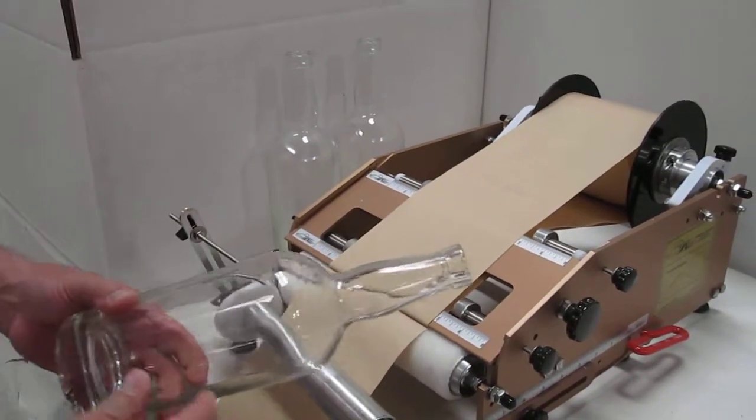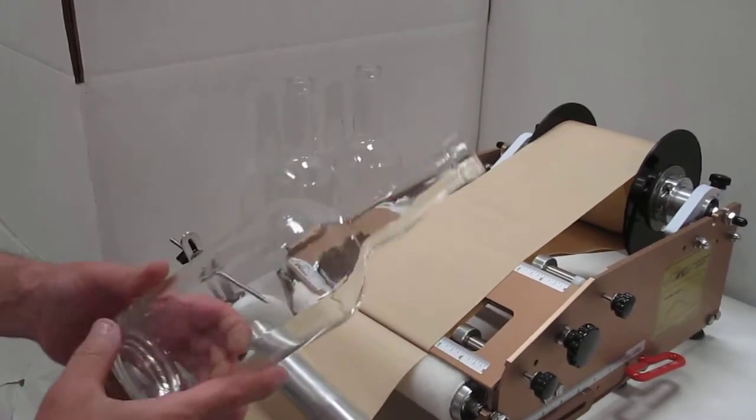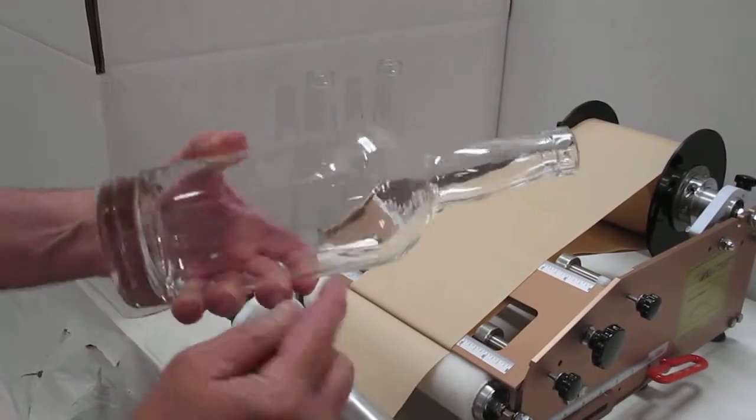This is the Race Taper Capable. We're going to be doing front and back labels on a tapered bottle. These bottles have seams, this side and this side.